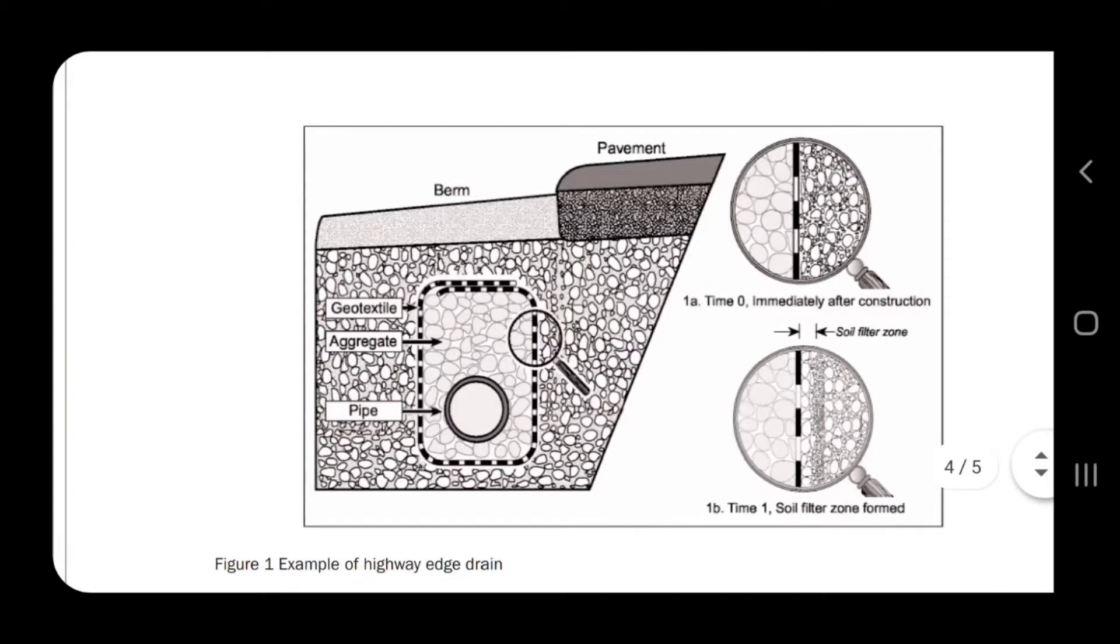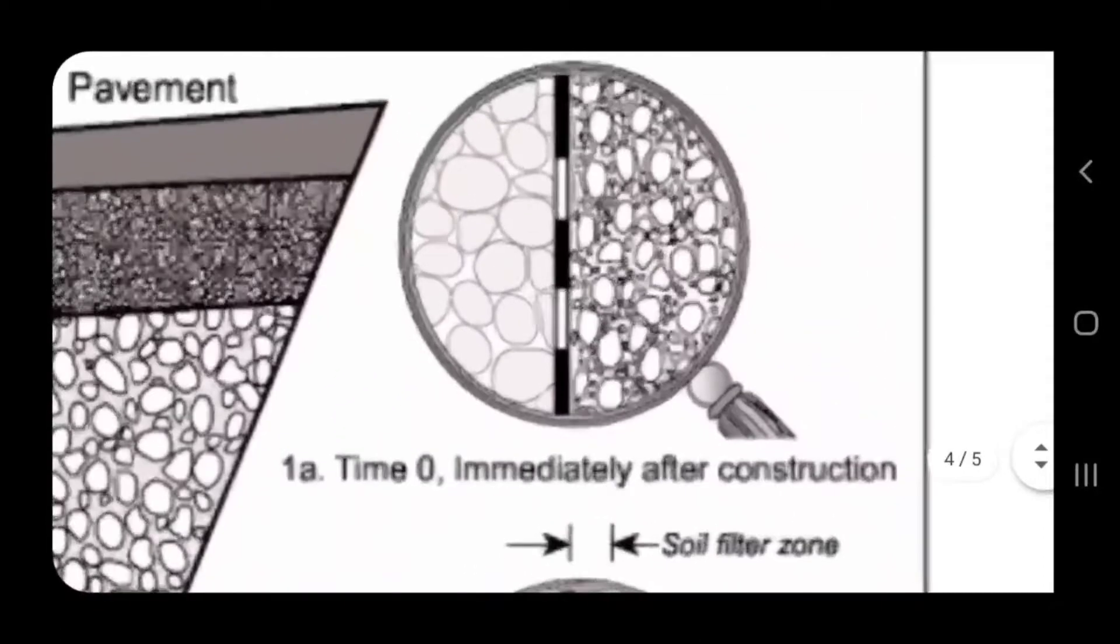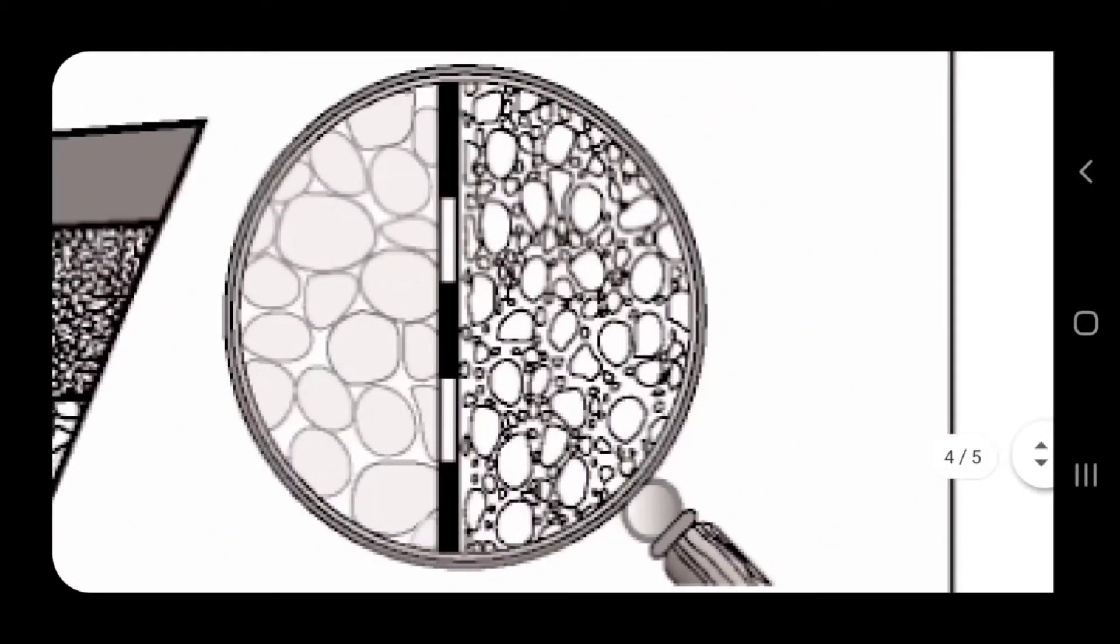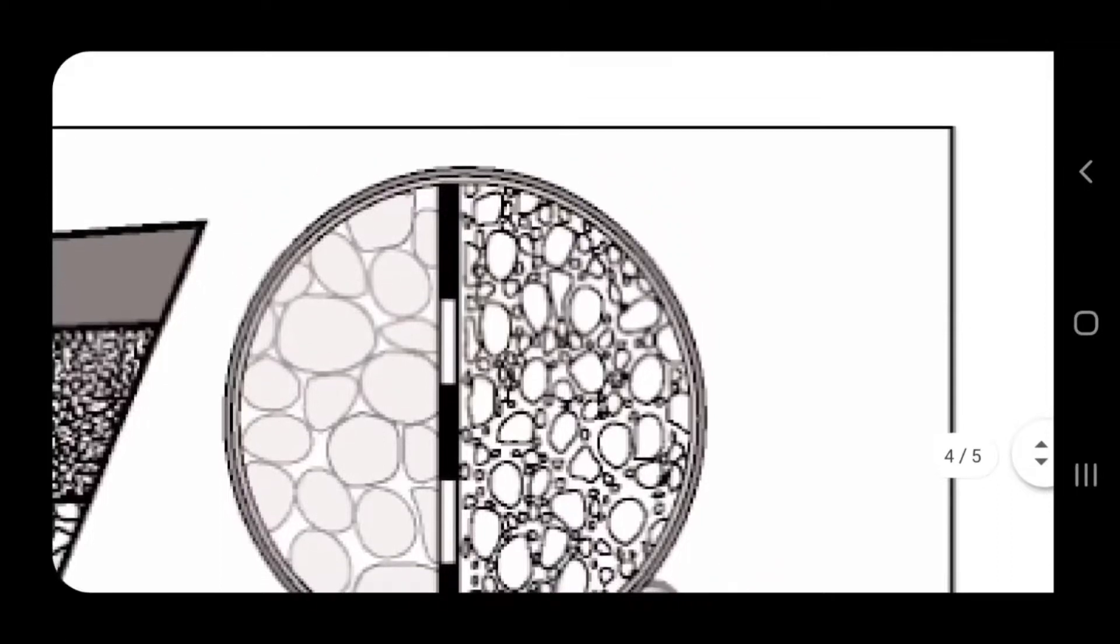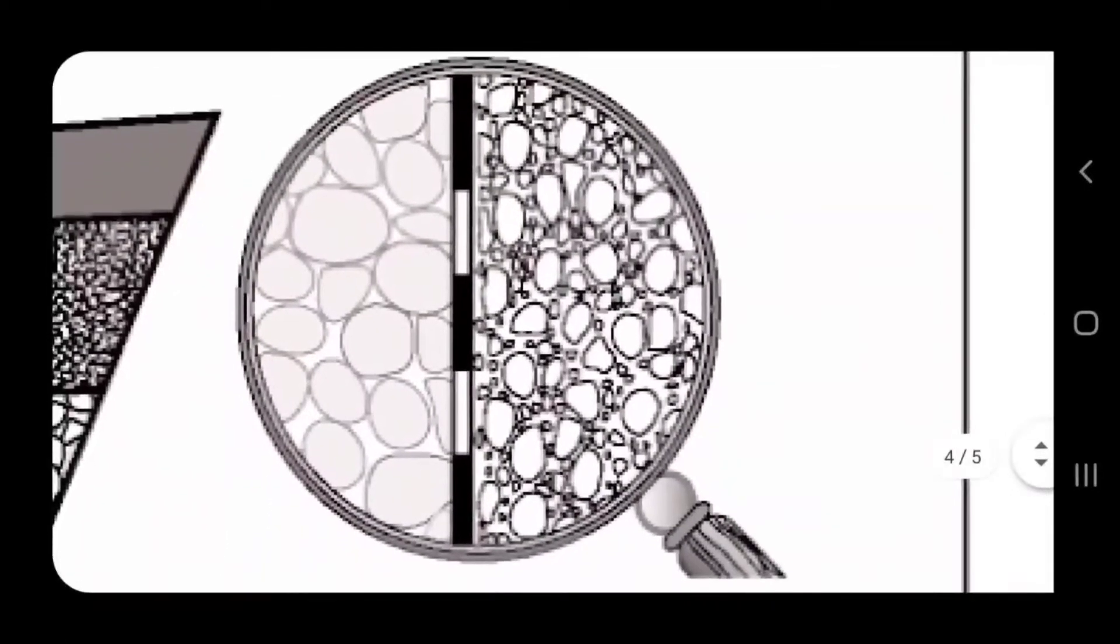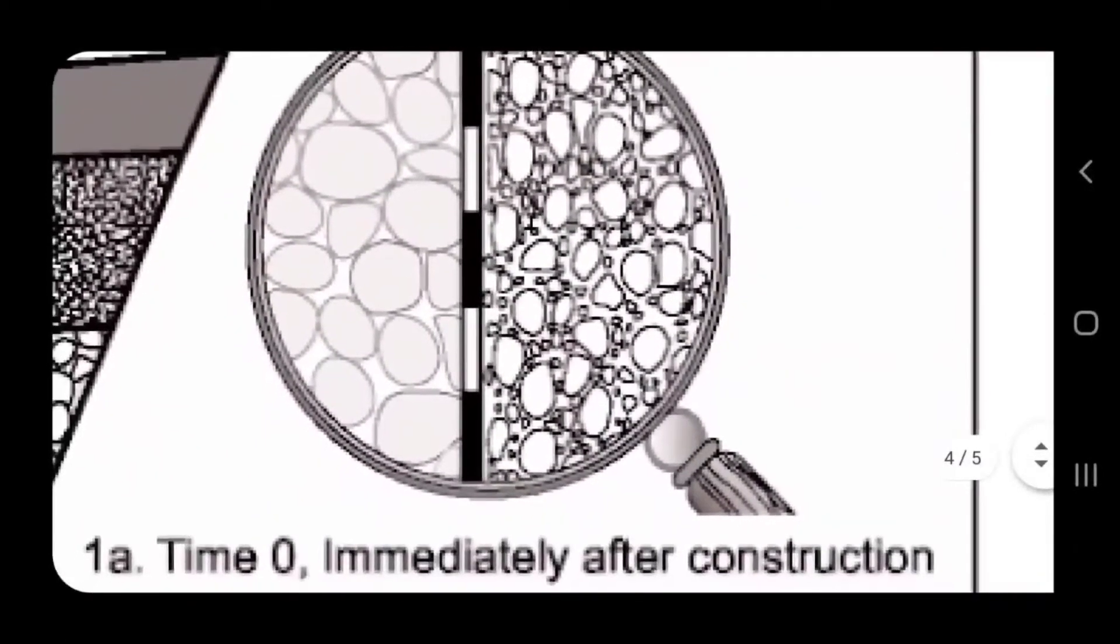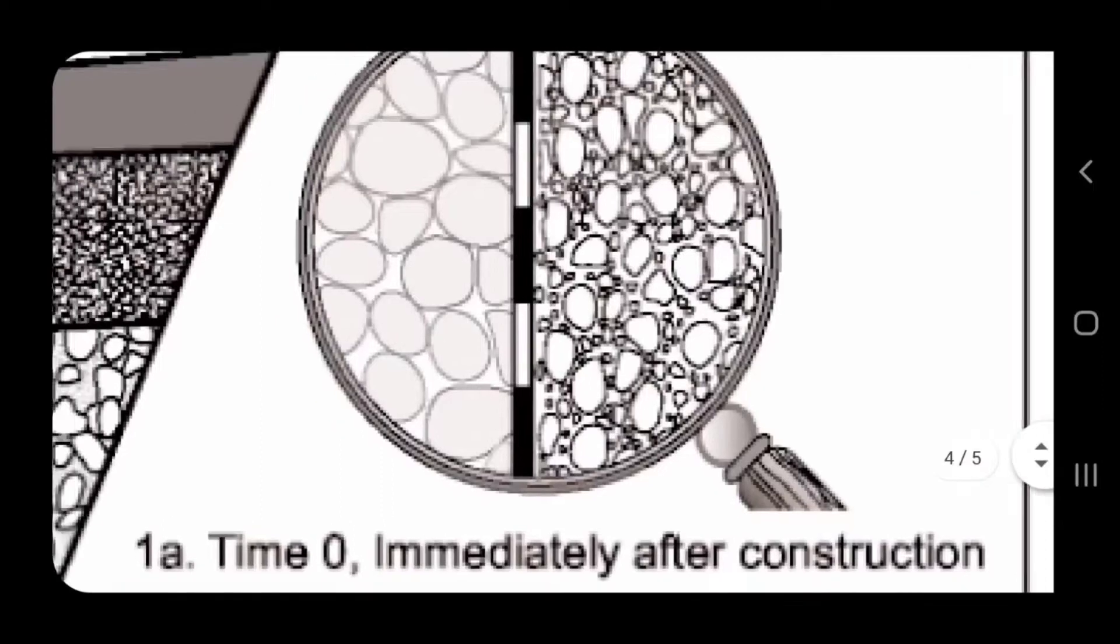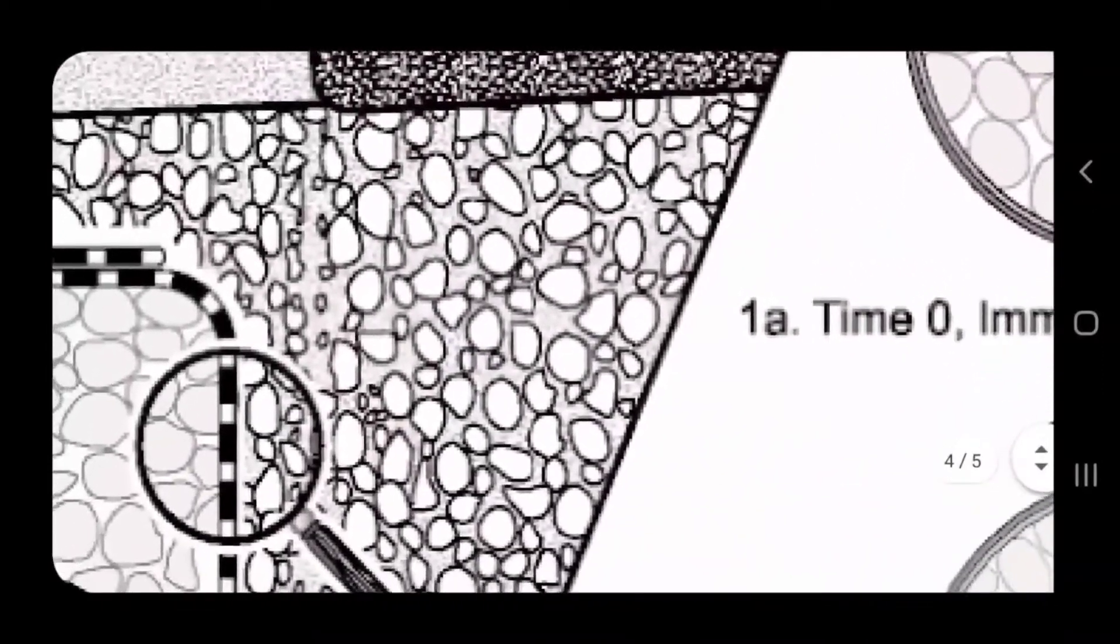They got a magnifying glass and they're zooming in on the fabric. So you got your drainage stone on the left, you got in the middle of that magnifying glass the non-woven geotextile double punch fabric, and then you have your soil on the right side of that magnifying glass. Now this is immediately after construction, so that's how it looks.